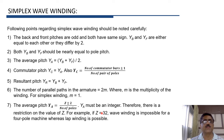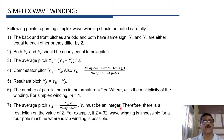Whereas for the same number of conductors, lap winding is possible but wave winding is not. Therefore, in case of wave winding, YA must be an integer — only then will the winding be possible. YA is given by (Z ± 2) / number of poles.